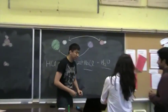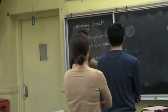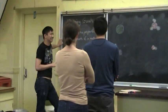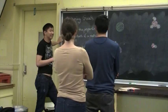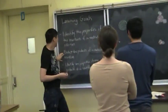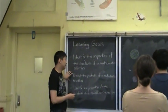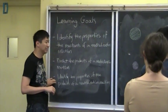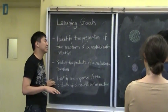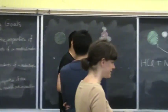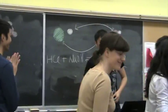Before I let you go, let's revisit the learning goals. What are the properties of the reactants of a neutralization reaction? They are very dangerous. And what happens to produce? Water and salt. And what are the properties of water and salt? They are neutral in pH and they are not dangerous. That's all I have today. Thank you. We'll continue the rest on Monday.